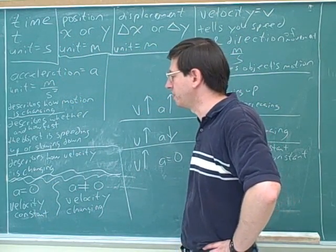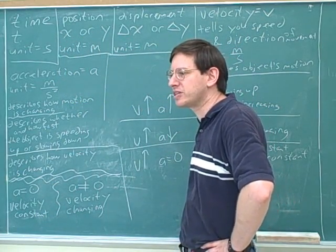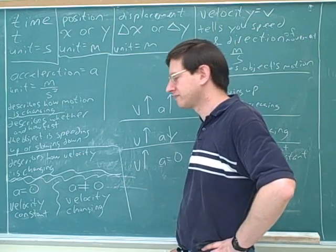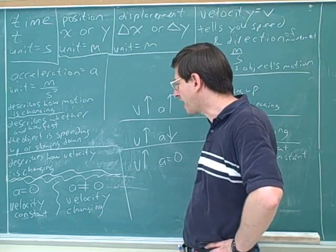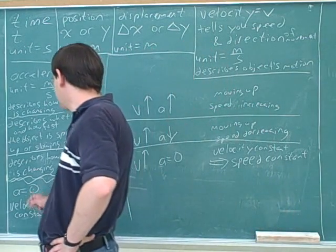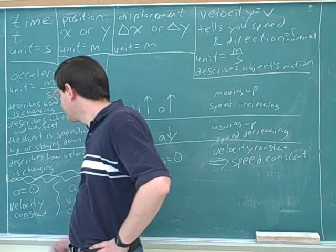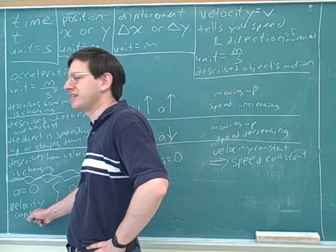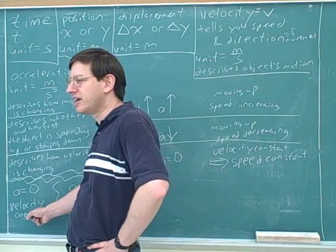Zero and constant are totally different ideas from each other. So when the acceleration is zero, that tells us that the velocity is constant.